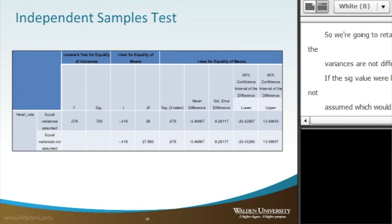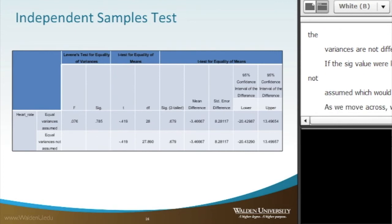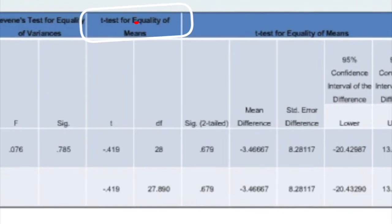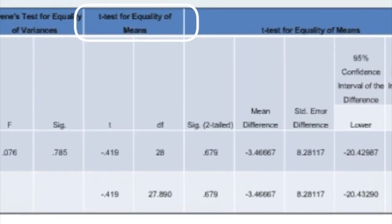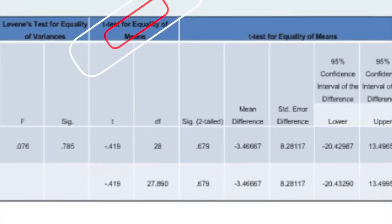As we move across our table and we see the t-test for equality of means, we can actually see there's a SIG two-tail. And in this case, we can see that our SIG two-tail value is .679, which is greater than .05.